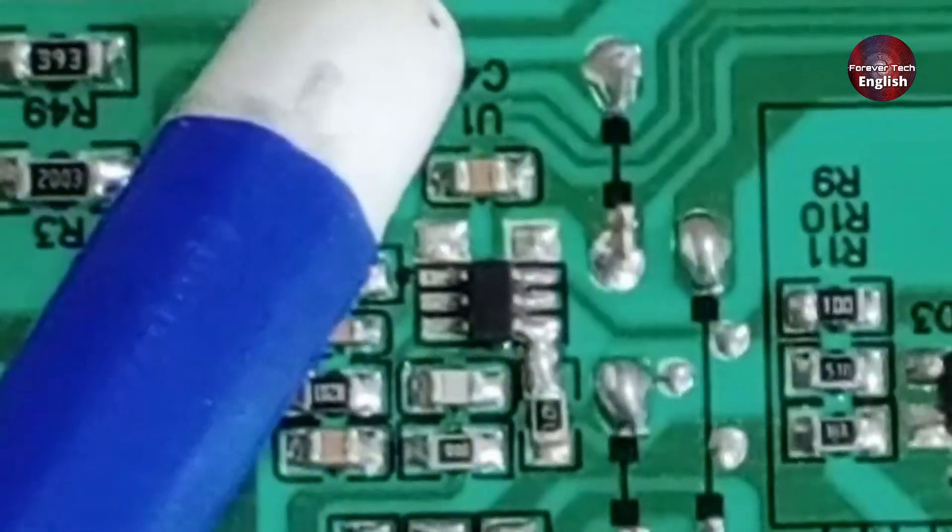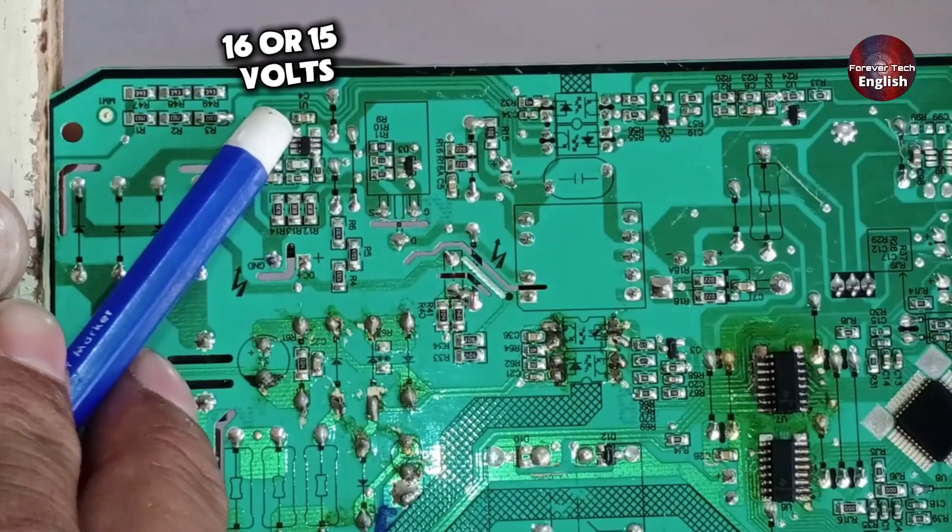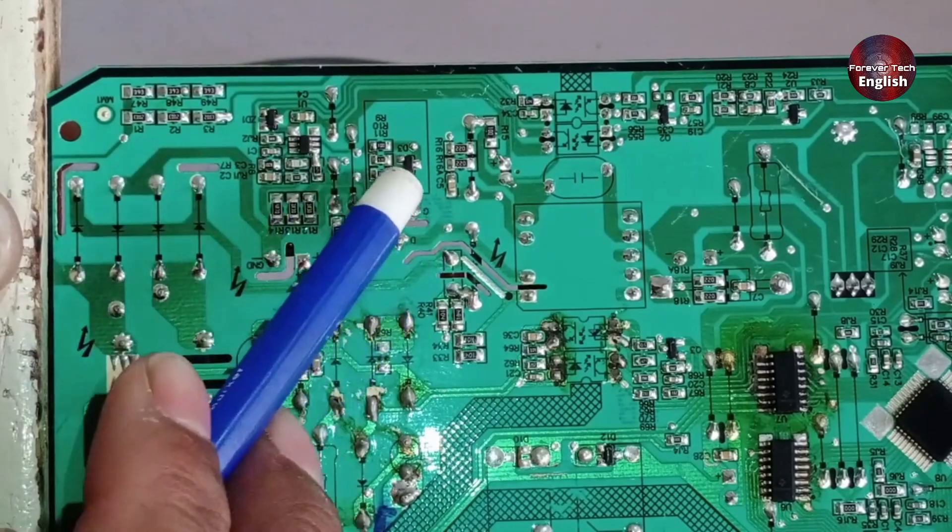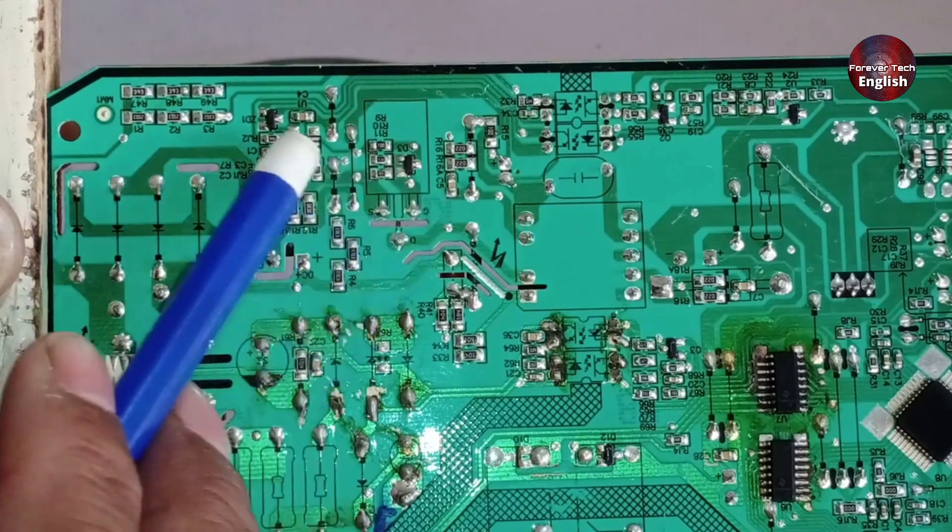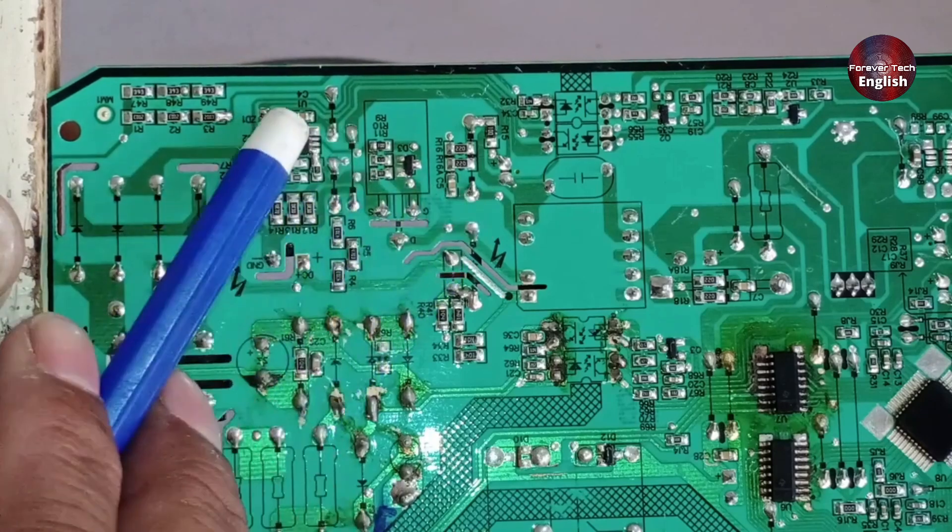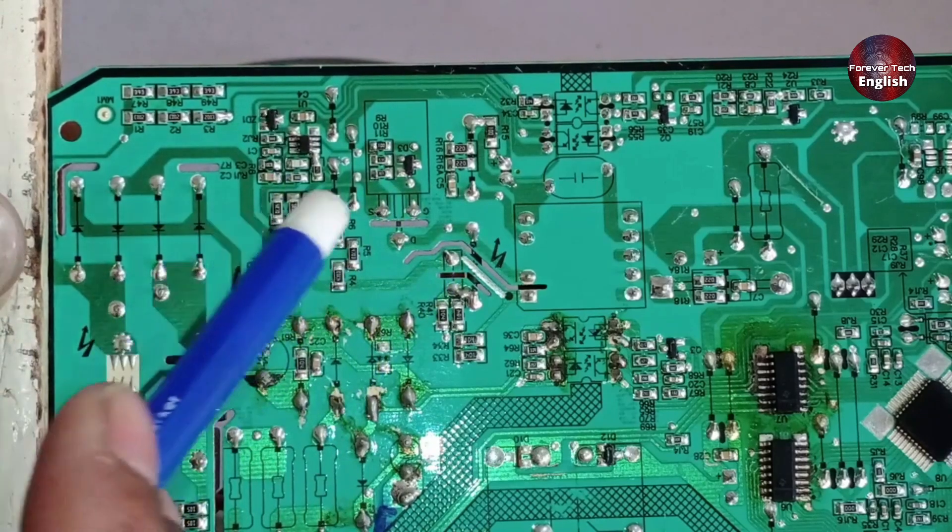Now here, look at capacitor C4. It should give us 16 or 15 volts. Similarly, if you look at capacitor C5, we should also get 16 or 15 volts on it. If both capacitors show 16 or 15 volts, it means the SMPS is functioning correctly.